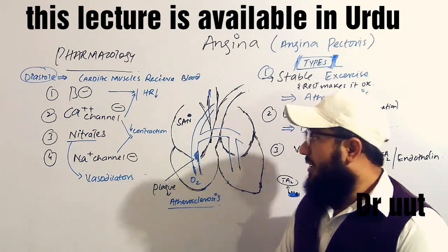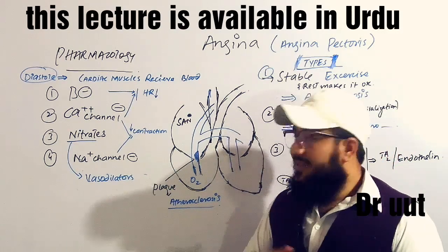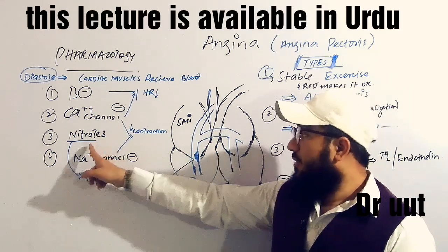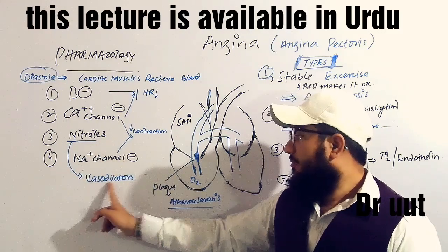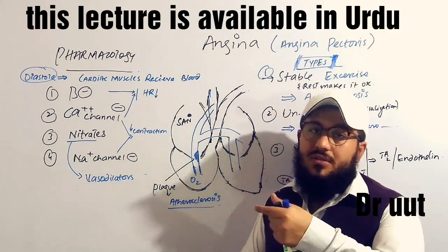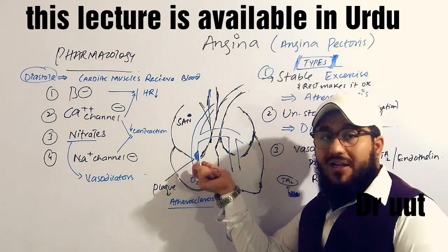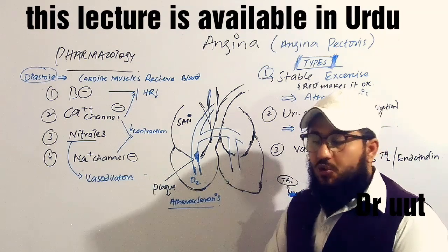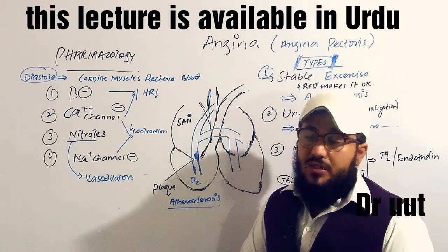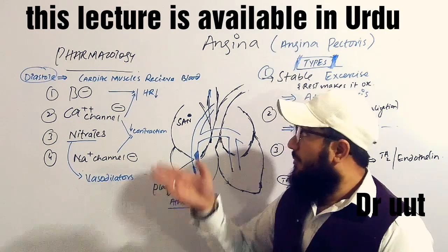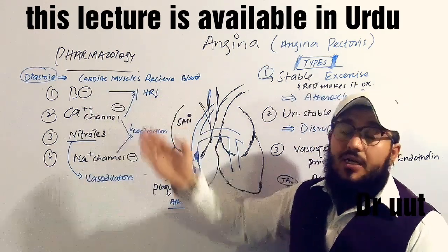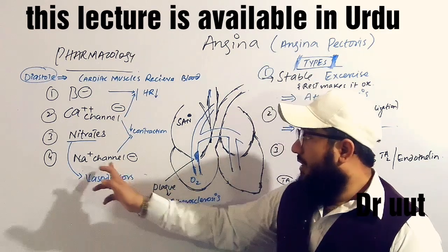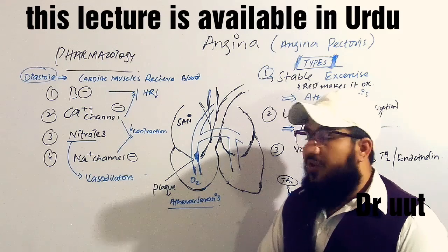Nitrates do not work by increasing diastolic time, but instead increase blood supply by dilating the blood vessels — they are well-known vasodilators. By dilating the blood vessels, blood is allowed to move to the specific part of the heart. When the cardiac muscle receives blood, it receives oxygen, and the pain is relieved.